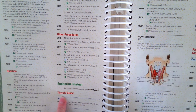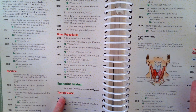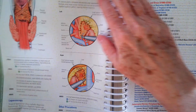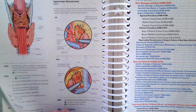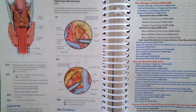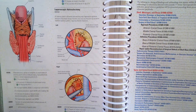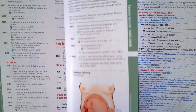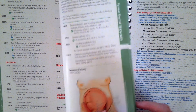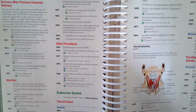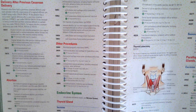The endocrine system includes the thyroid, parathyroid, thymus, adrenal glands, pancreas, carotid body, and that's it. It goes to page 410, so from page 408 to 410 is where you'll find it. There are no specific coding guidelines just for the endocrine system, so we utilize the general surgery coding guidelines at the beginning of the surgery section.